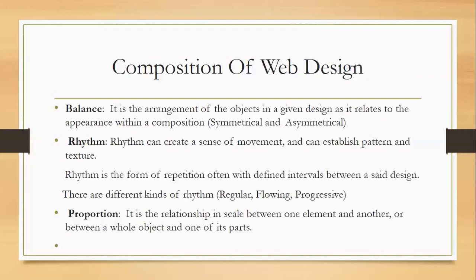There are some compositions of web designing. The first is balance — the arrangement of objects in a given design as it relates to their appearance within the composition. It is of two types: symmetrical and asymmetrical. If there is a regular arrangement between objects, it is symmetrical. If irregular spacing is done between elements in the composition, it is called asymmetrical.